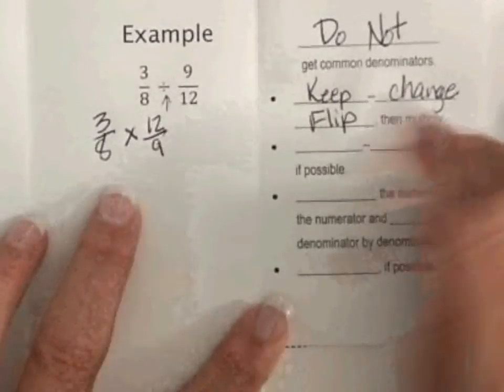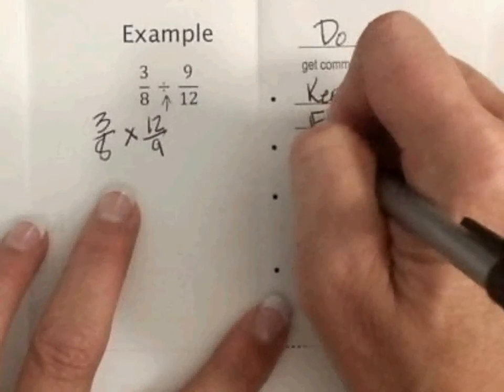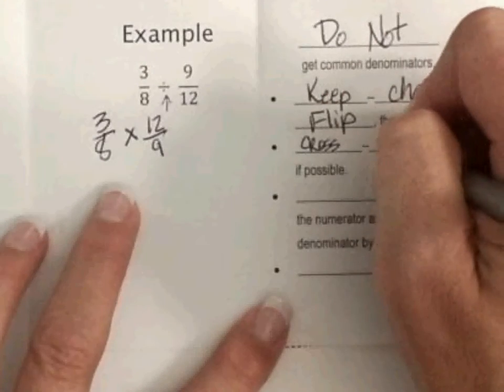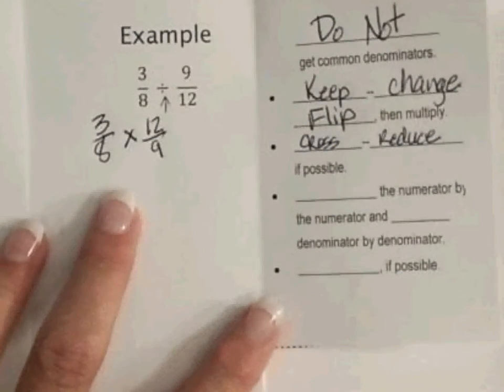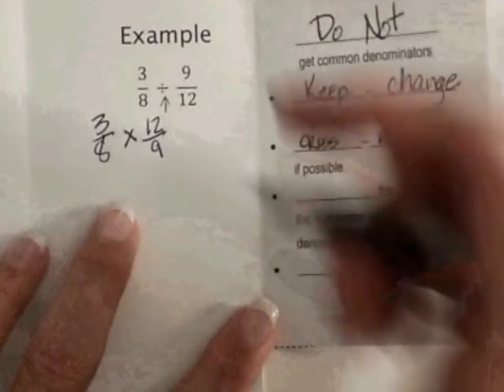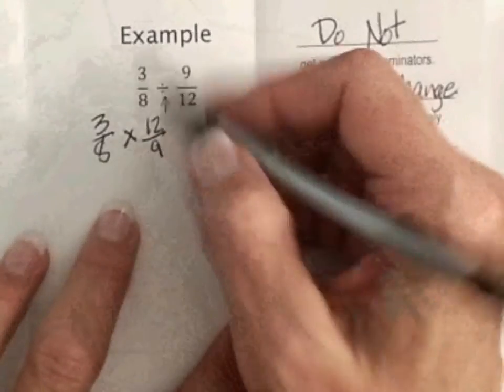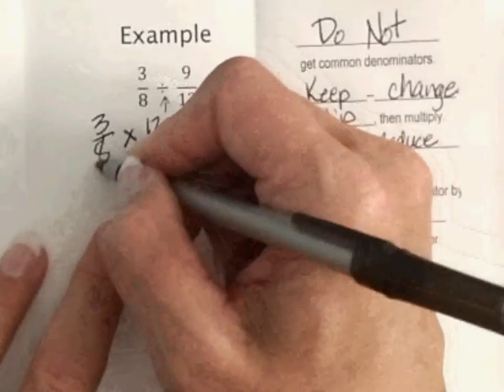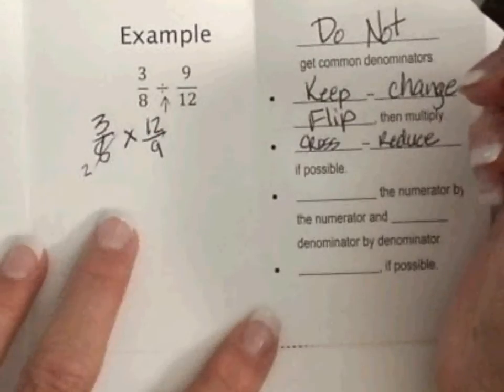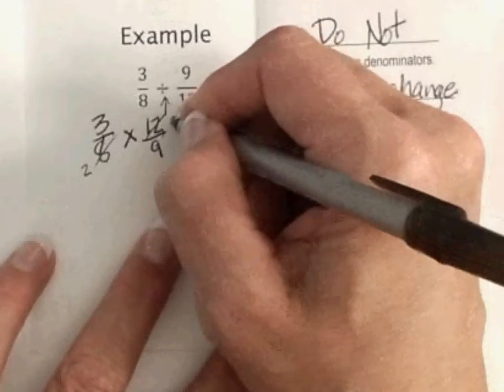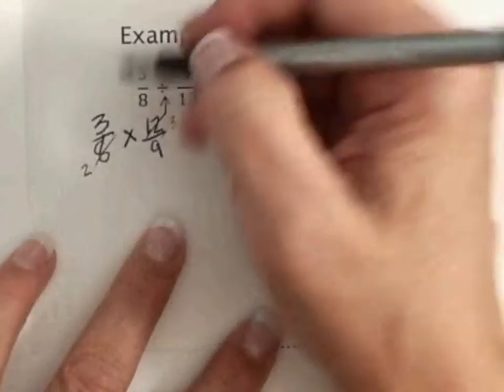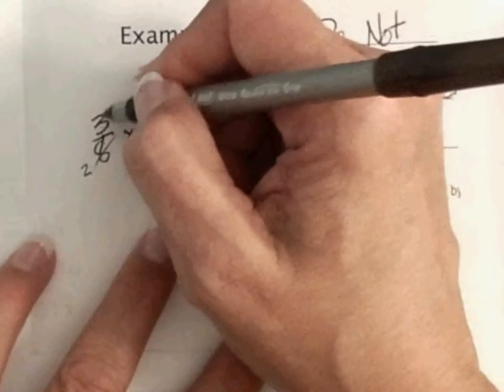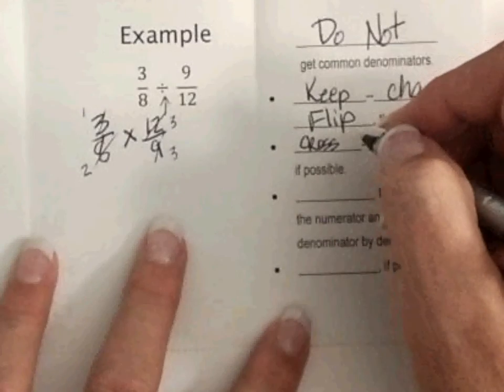So, she is just switching the numerator and the denominator at that point. So, now I'm going to cross-reduce. Remember, if you do your math correct, if you do not cross-reduce, you will still get the correct answer. So, cross-reduce. I'm looking at 8 and 12, I know 4 goes into both of those. So, 4 goes into 8 two times, 4 goes into 12 three times. Now, I'm looking at 3 and 9. I know 3 goes into both of those. 3 goes into 3 once, 3 goes into 9 three times.